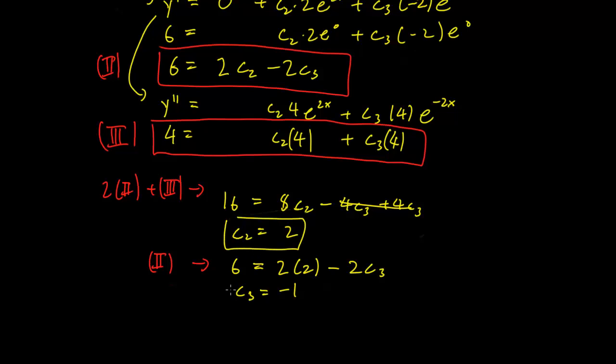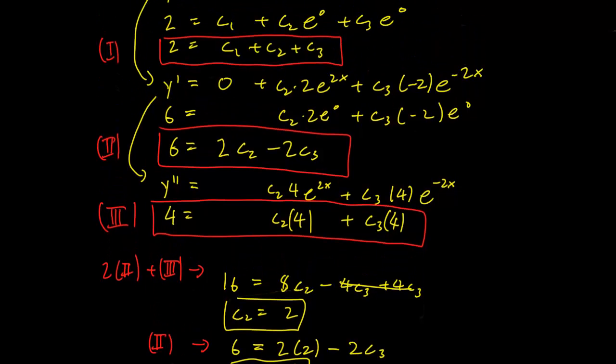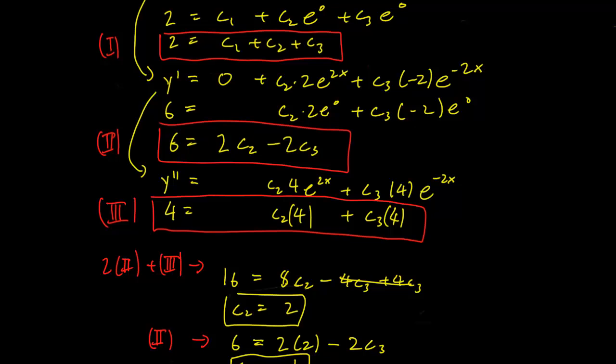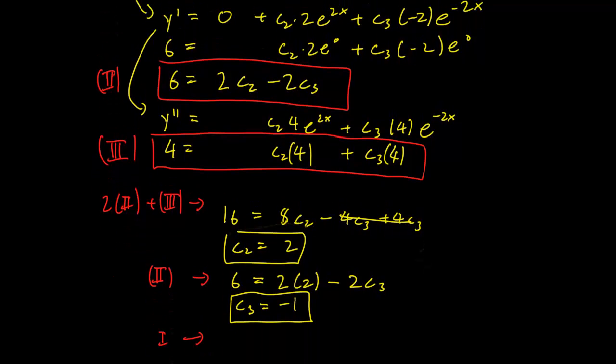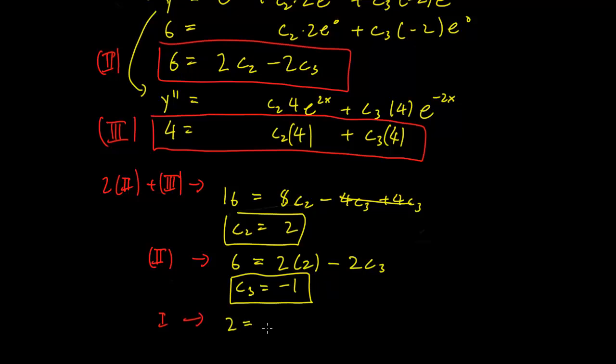So finally, we can use the first equation to tell us, 2 = c₁ + c₂ + c₃. So 2 = c₁ + 2 + (-1). And this will imply that c₁ equals 1.